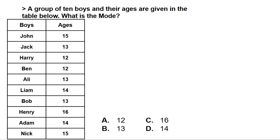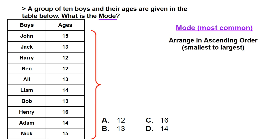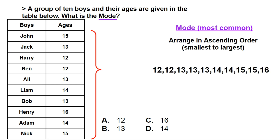In this question, we are asked what is the mode. The mode is the most common number. To get the mode, we first arrange the numbers from smallest to largest in ascending order. We take all the ages of the boys and arrange them — the number that repeats the most is the mode, and that is 13. Making our mode 13 and our answer B.